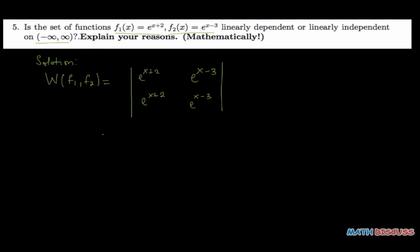By the time we take the determinant of this, what we will have is e^(x+2) times e^(x-3) minus e^(x+2) times e^(x-3). Since this and this are equal, this implies that the Wronskian is 0.